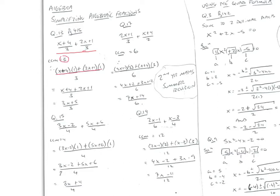We draw our line, we've found 3 underneath, and we set up two sets of brackets with the plus sign in the middle. We write x+4 in the first bracket and 2x+1 in the second. 3 goes into 3 one time, and 3 goes into 3 one time. We multiply all of that out and simplify to get (3x+5)/3.